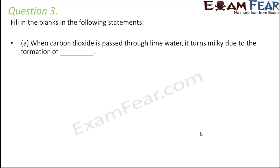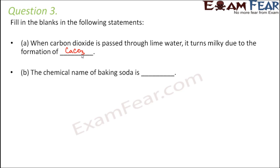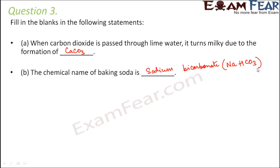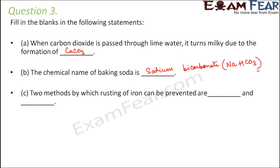Question number three: fill in the blanks. When carbon dioxide is passed through lime water, it turns milky due to the formation of calcium carbonate. The chemical name of baking soda is sodium bicarbonate, with chemical formula NaHCO₃.